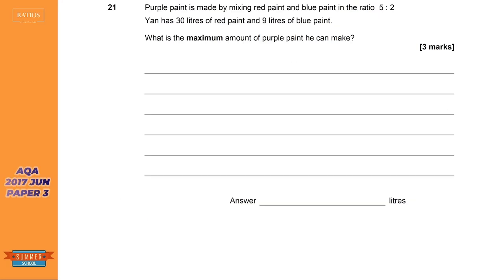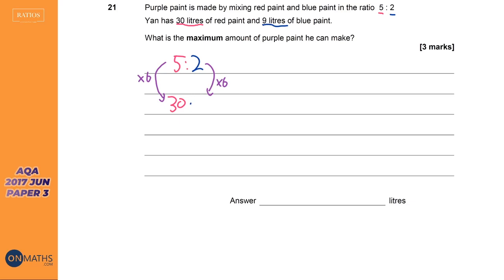Last up we have AQA, and this question is all about purple paint. We've got five parts red and two parts blue, but we only have 30 liters of red paint and 9 liters of blue. I'm going to start by completely ignoring the 9 liters of blue paint — pretend we've got infinite blue. We've got the ratio 5 to 2, and we know we've got 30 liters of red paint, so we times by 6. That gives 12 liters of blue needed for 30 liters of red.